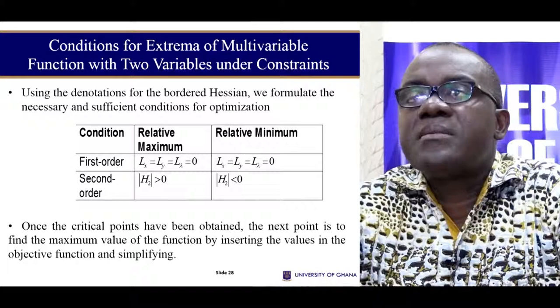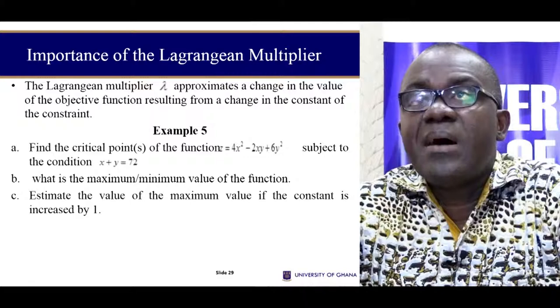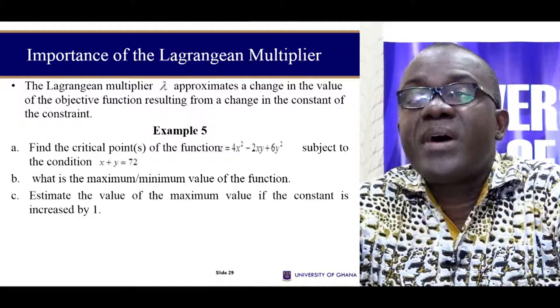For a simple 2x2 sort of function, this is the condition for a relative maximum and a relative minimum. In the same way, let's take an example and see how this will work out. In this small example, I have my function and I have my constraint function.